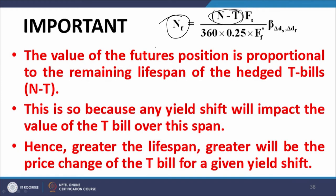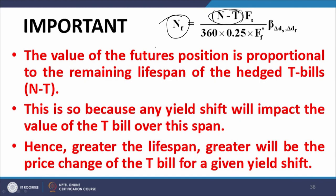The value of the futures position is proportional to the remaining lifespan of the hedged T-bills because any yield shift will impact T-bill prices with reference to the remaining life, not what has already elapsed. Greater the remaining life of the T-bills, greater will be the price change for a given yield shift.